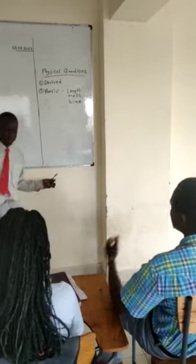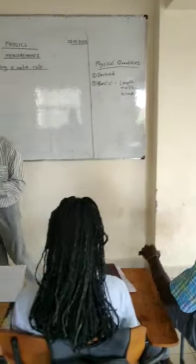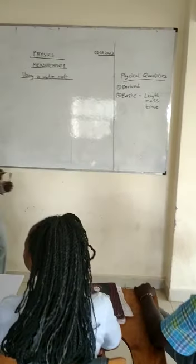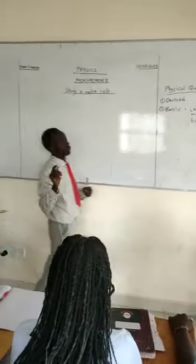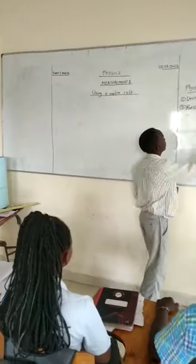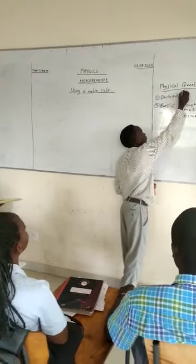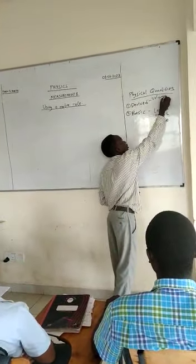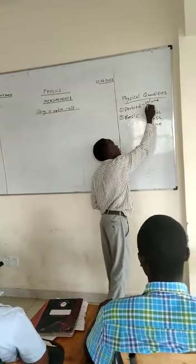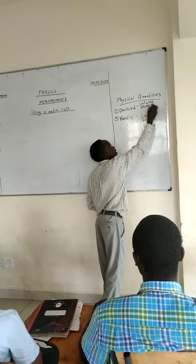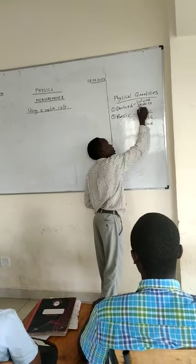Are you glad for him? Now, Joyce, can you give us an example of a derived physical quantity? Volume, electricity, and area.